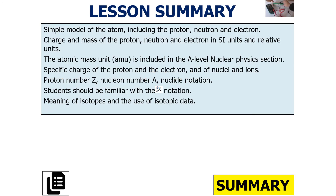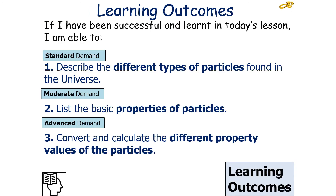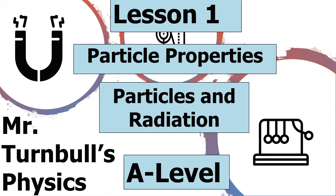So, what have we learnt today? We should understand the charge and mass of the proton, neutron, and electron in SI units and in relative units. We should know that the atomic mass unit is used both here and in the nuclear physics section. We should be able to calculate the specific charge of protons, electrons, nuclei, and ions using proton number and nucleon number. If we've been successful, we can describe the different types of particles in the universe, list the basic properties of particles, and convert and calculate different property values. Thank you very much for listening, and have a lovely day.